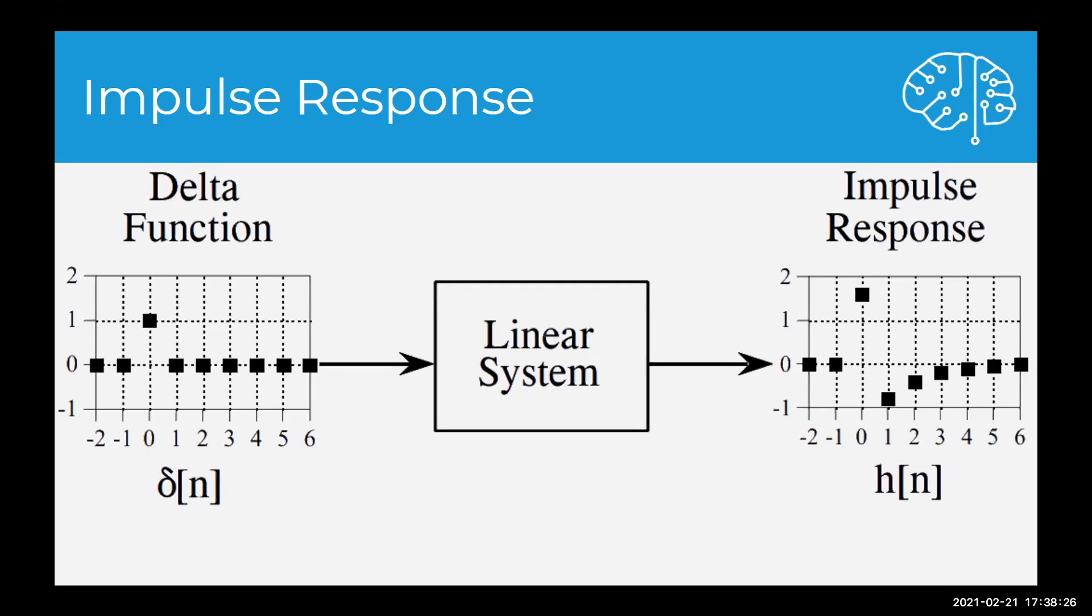In different applications of DSP, this impulse response might be called something else. If the system is a filter, then the impulse response is called the filter kernel, the convolution kernel, or just simply kernel. In image processing, the impulse response is called the point spread function. All of these mean the same thing, but they are actually used in slightly different ways.